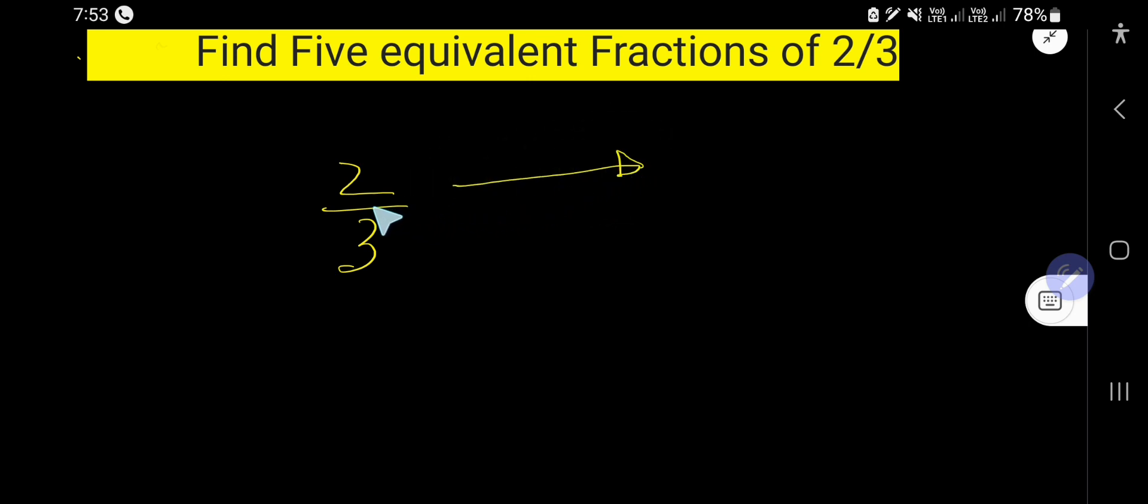To find out the equivalent fraction of 2 by 3, you need to multiply both numerator and denominator by the same number except 0 and 1. So let's start with 2.